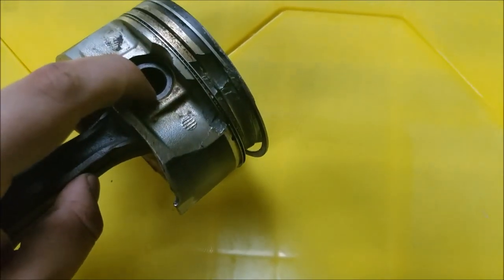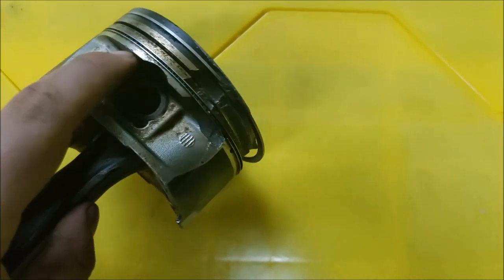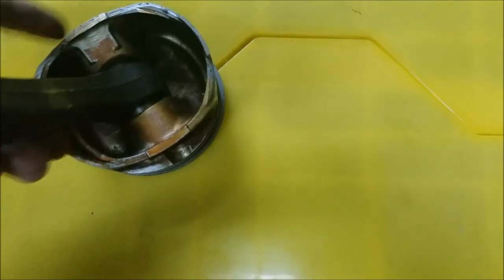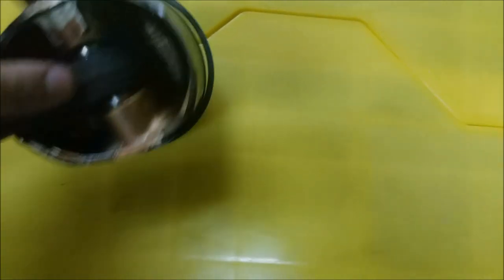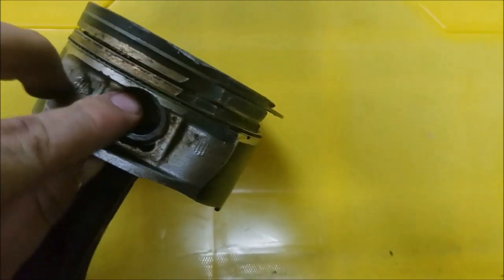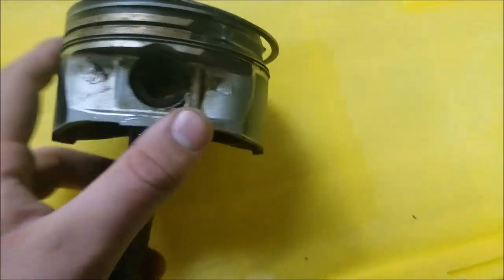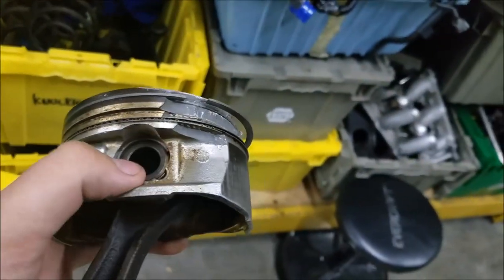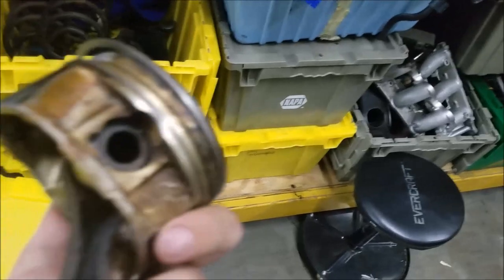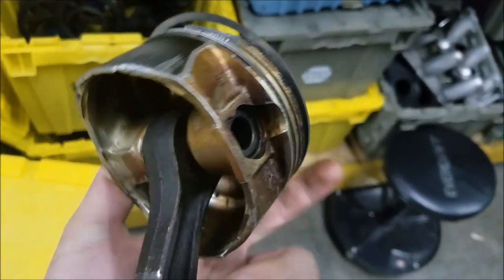This part here is the piston wrist pin. Some can be free-floating like this one. There would be a little ring inside of here that would keep it from falling out. But this one is pressed in, so you'd need a hydraulic press to get that in there.